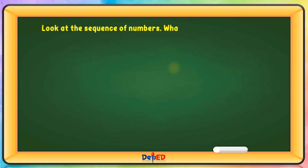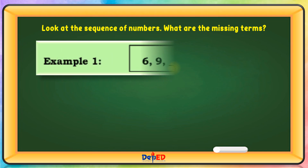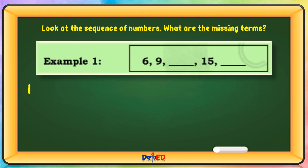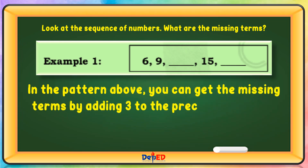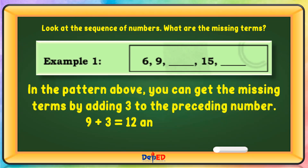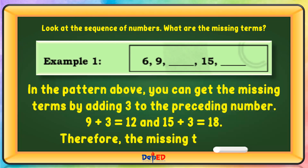Look at the sequence of numbers. What are the missing terms? Example 1. In the pattern above, you can get the missing terms by adding 3 to the preceding numbers. 9 plus 3 equals 12, and 15 plus 3 equals 18. Therefore, the missing terms are 12 and 18.